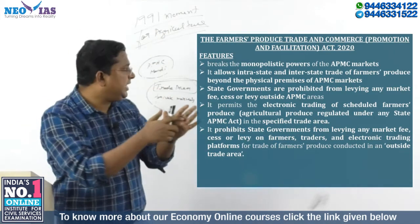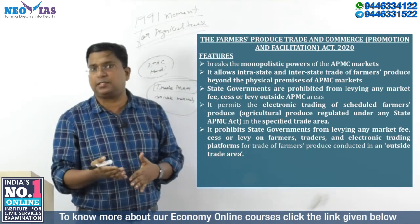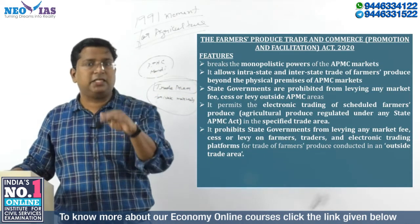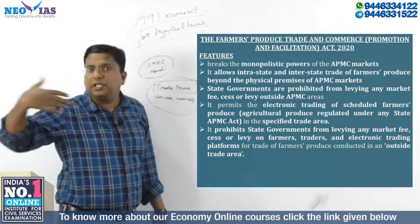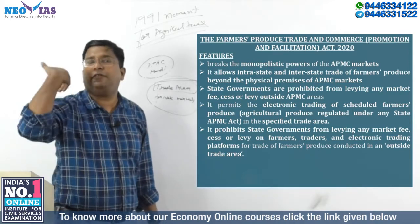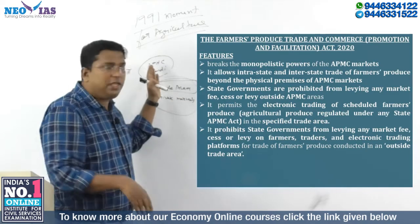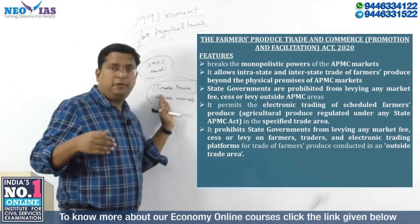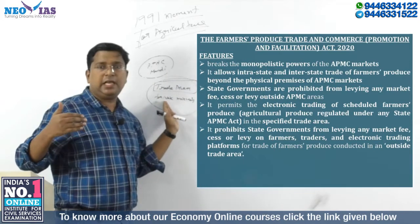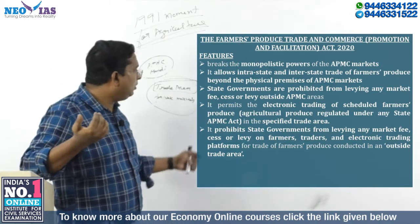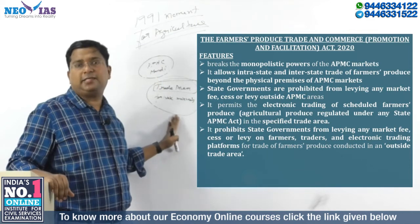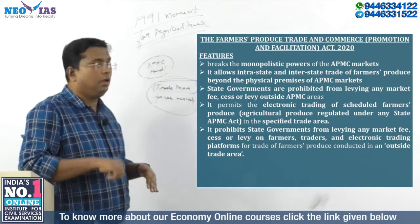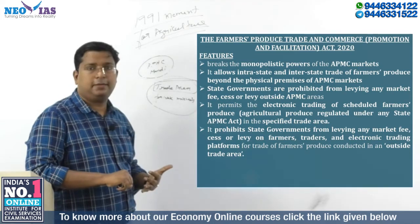There are a lot of controversies associated with this law, but first let's deal with the features. There have been many misunderstandings about this law. Be very clear: this law gives the farmer freedom of choice — the option to either sell to the APMC mandi or to the new private markets in the trade area, which are free from state APMC laws. This will result in competition and a better price for the farmer's agricultural produce. This law also permits electronic trading.